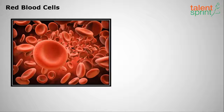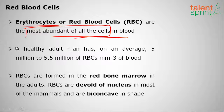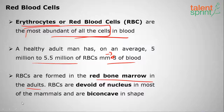Moving on to red blood cells: RBCs are also called erythrocytes and are the most abundant of all the cells. A healthy adult man has an average of 5 million to 5.5 million RBCs per millimeter cube of blood. RBCs are formed in the red bone marrow in adults.